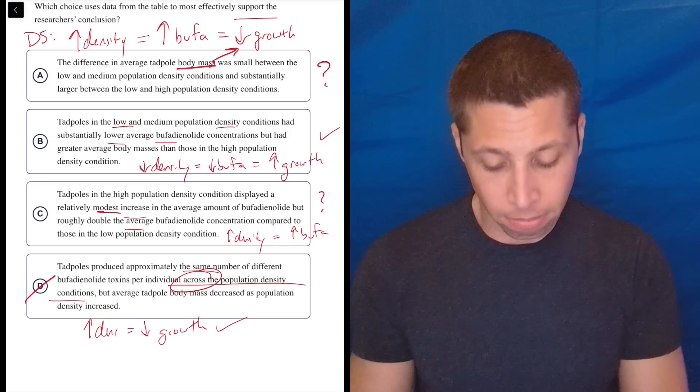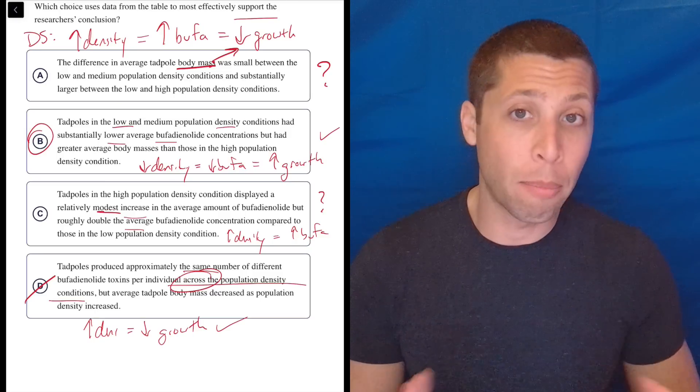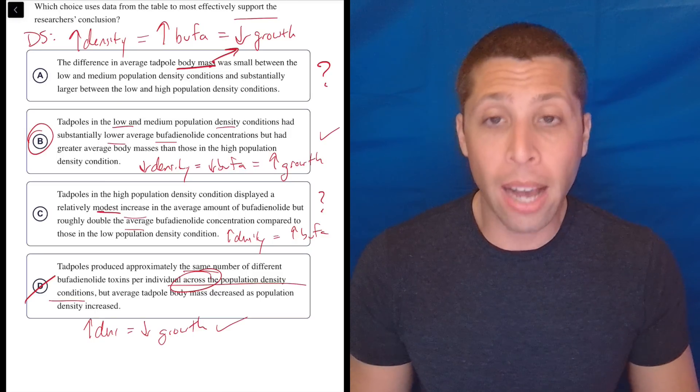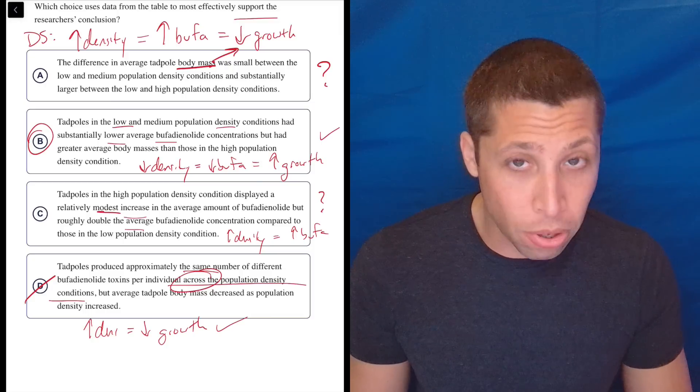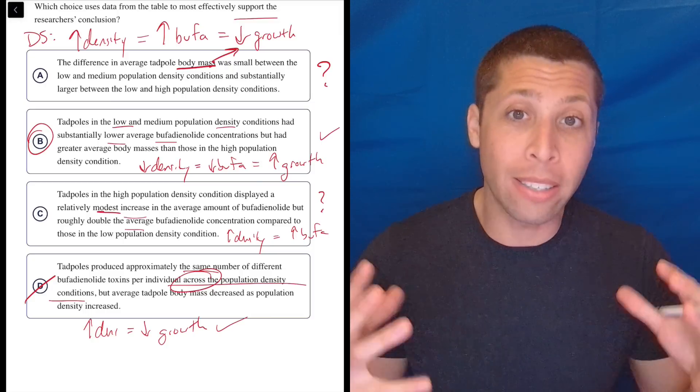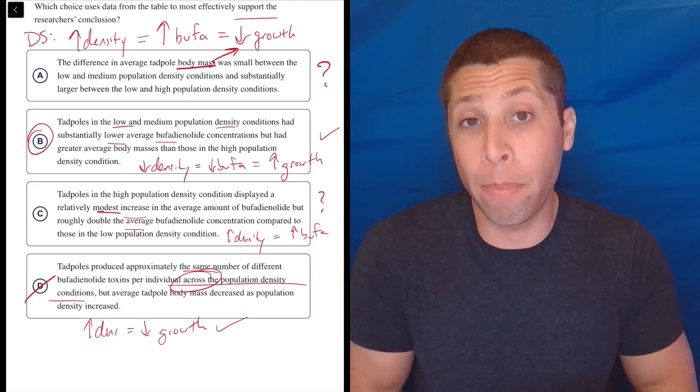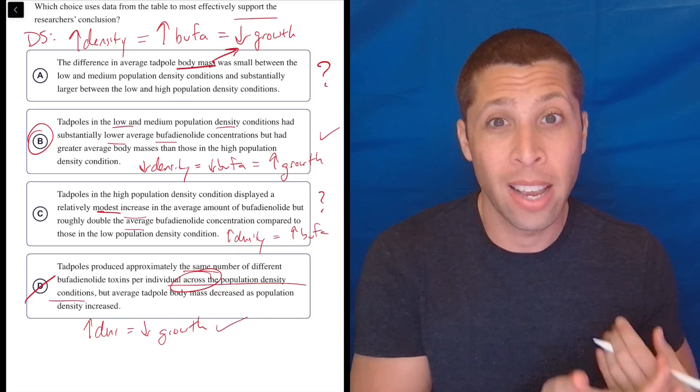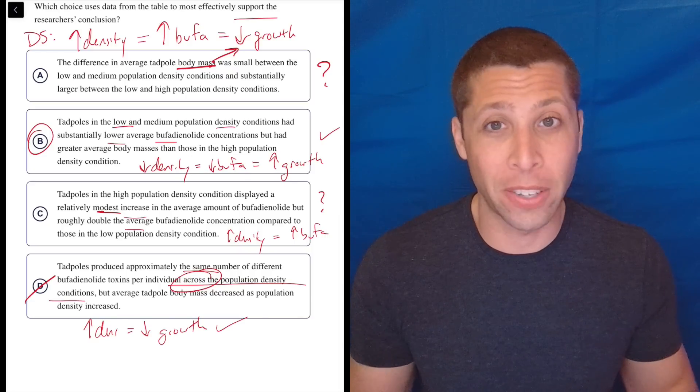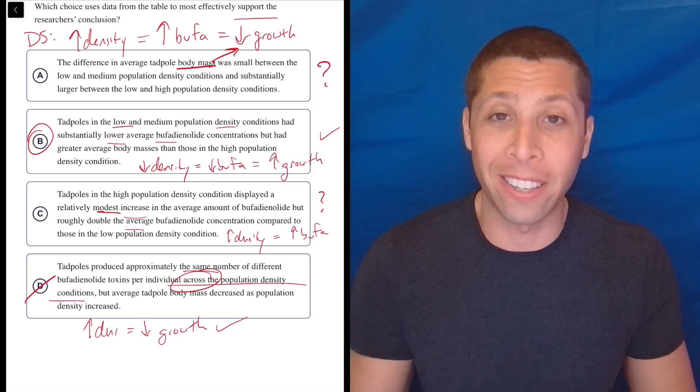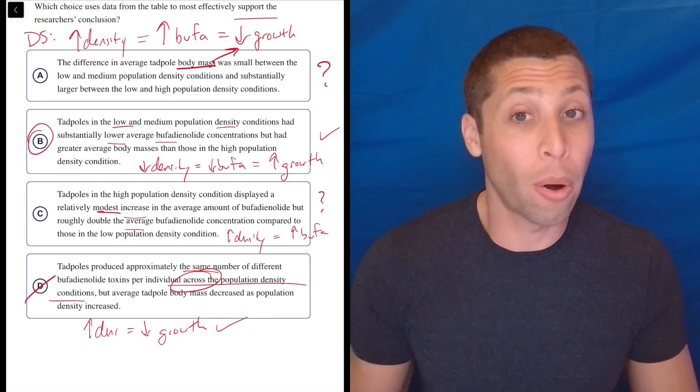Now, if this were me on a real test, I'd be done. I'd pick B, I'd move on because, yeah, I haven't really checked this out, and I haven't really done some deeper analysis of A and C, but I know that B works. It hits the right ideas. I have a timer that I have to make sure I finish as many questions as possible within the time limit of the hard module. So I've got to move on.